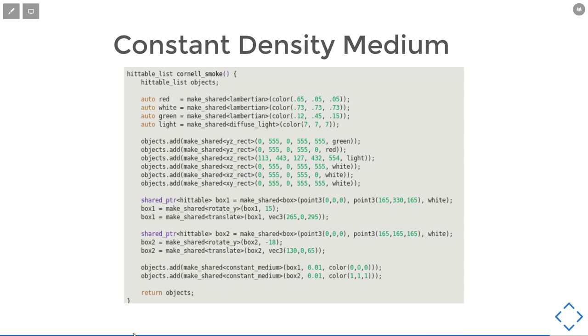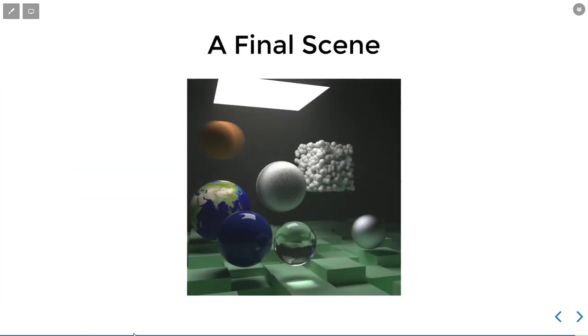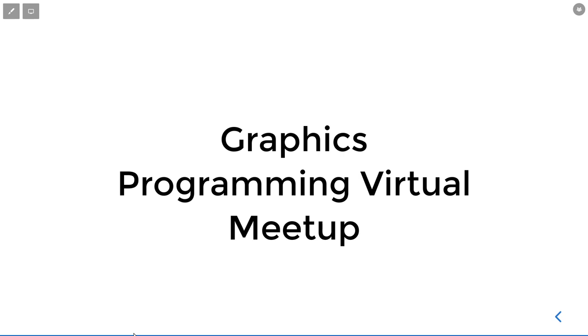I missed a few slides. First, we will have the constant density for the previous Cornell Box scene, where we apply the constant media to all the shapes and we will have this. Applying all the previous features we added to our ray tracer, we can have this final thing. Thank you.